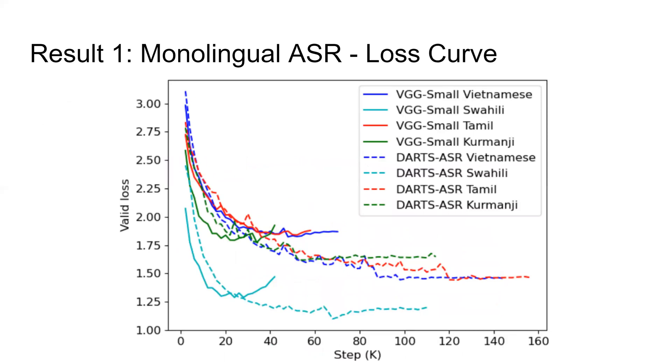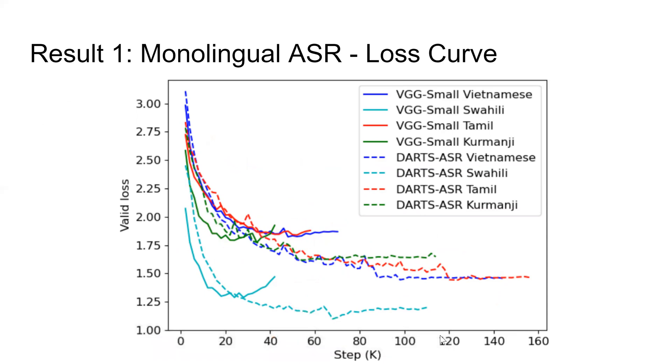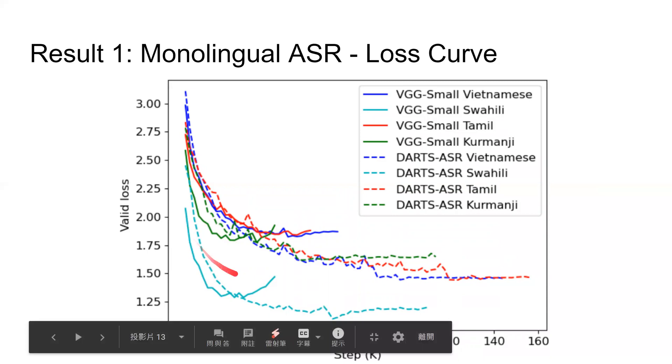We also plot the curves of validation losses of ASR models with VGG or the full DARTS-ASR. The solid lines are the results of VGG and the dashed lines are those of DARTS-ASR. From these lines, we can observe the convergence of VGG is generally faster than DARTS-ASR, but DARTS-ASR can reach much lower validation losses in the end.